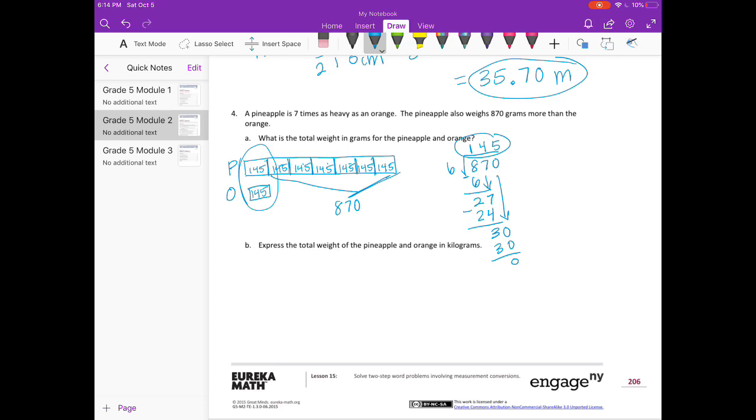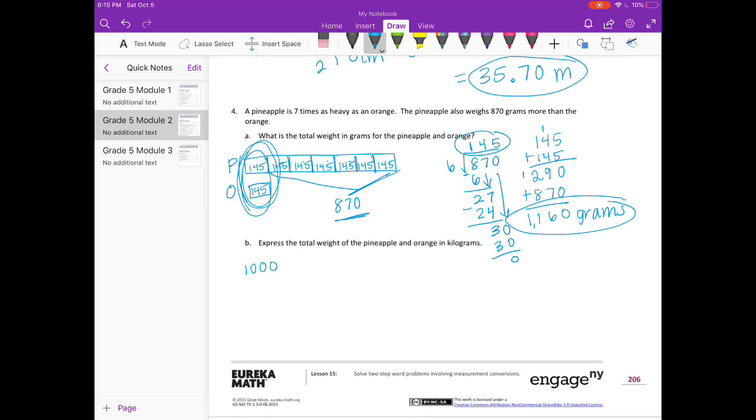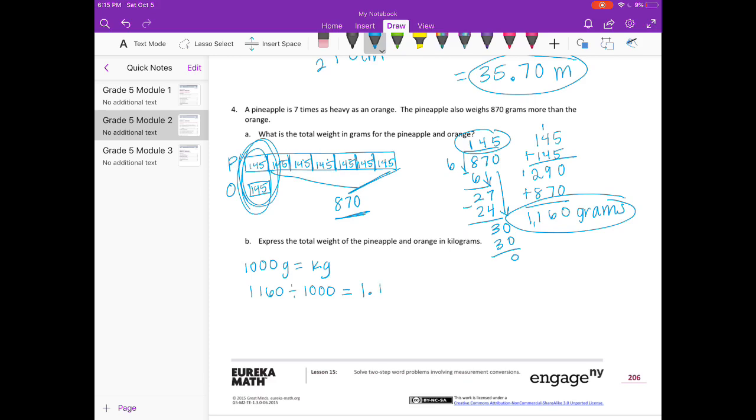What is the total weight in grams for the pineapple and orange? Well, we know that this part is 870, so we could add 870 plus 145 plus 145. I'll add 145 plus 145 to get these two pieces together. We get 290, and then I'm going to add the 870. We get 1160 grams. Express the total weight of the pineapple and orange in kilograms. There is 1000 grams in one kilogram, so 1160 divided by 1000 would give us 1.16 hundredths, or you can make it 1.160 thousandths kilograms.